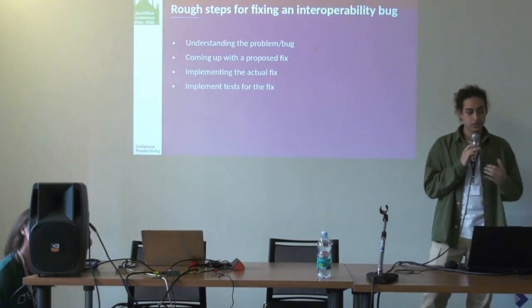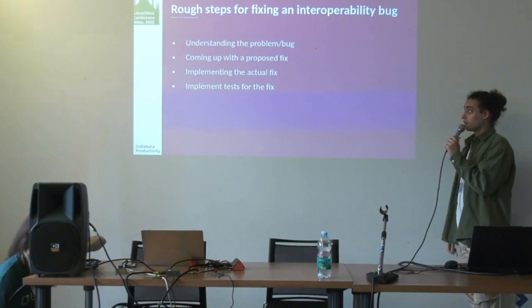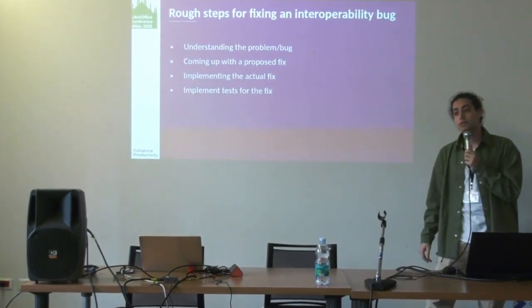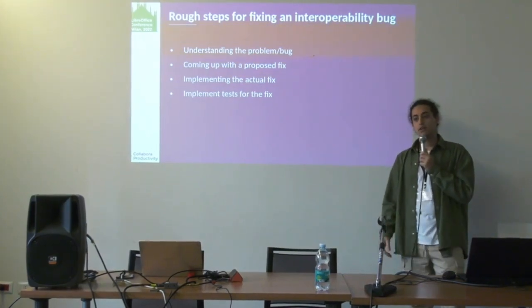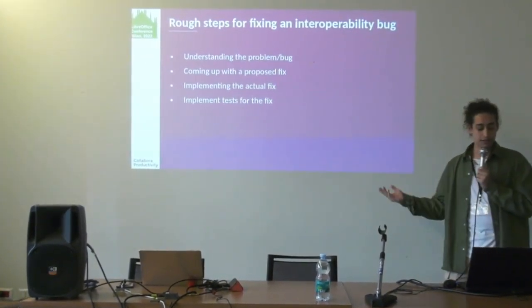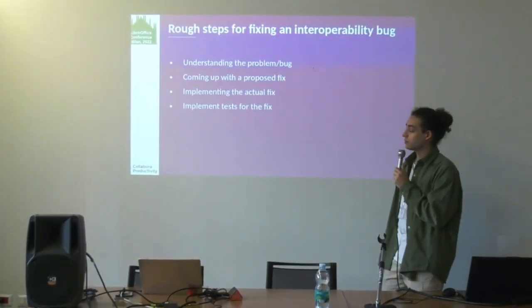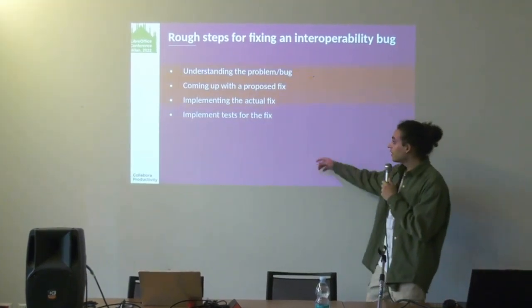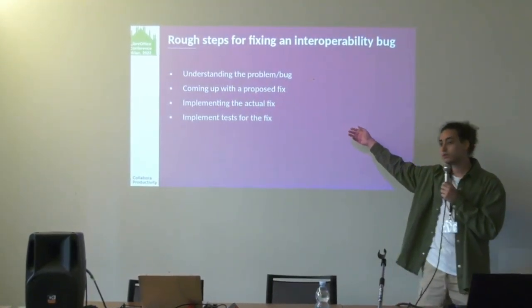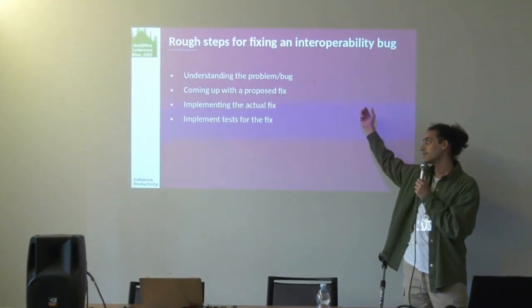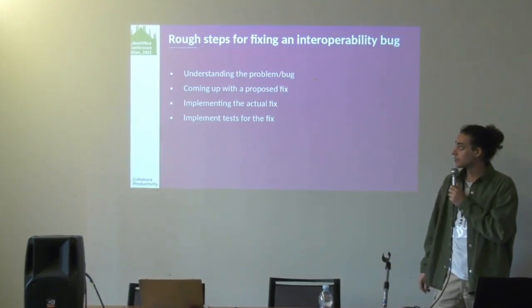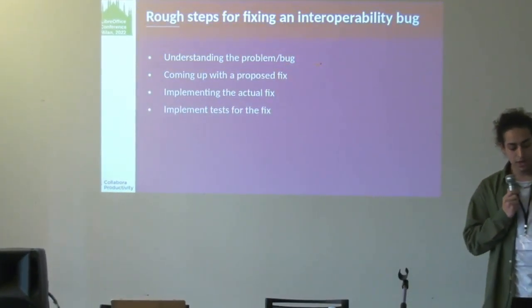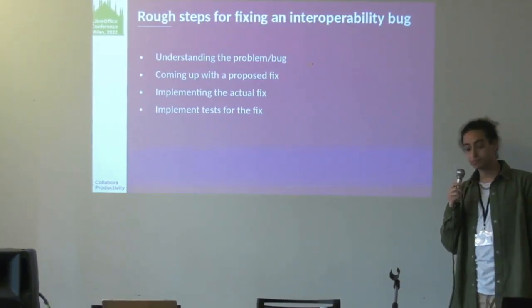What are the rough steps for fixing an interoperability bug? First, the most important part is understanding the problem and the bug, because it can be really complicated. Then we come up with a proposed fix — how it would behave if it was working correctly. These two steps are interlinked and we iterate between a proposed fix and implementation. And lastly, when we are done, we implement tests to ensure the work keeps working.